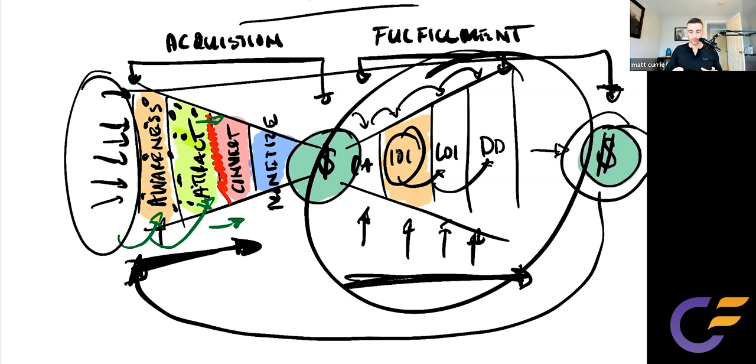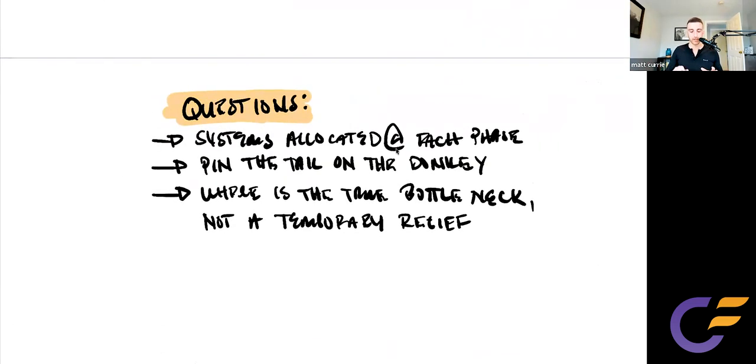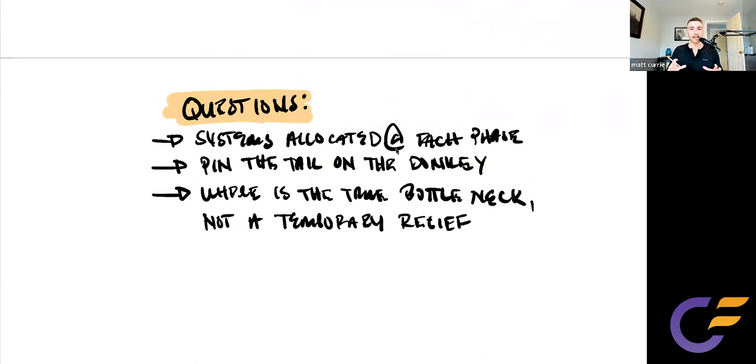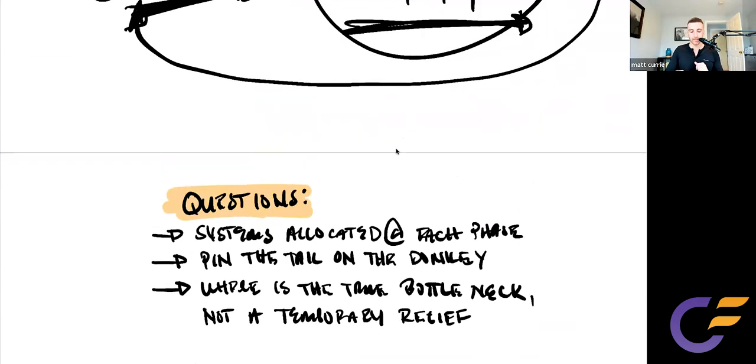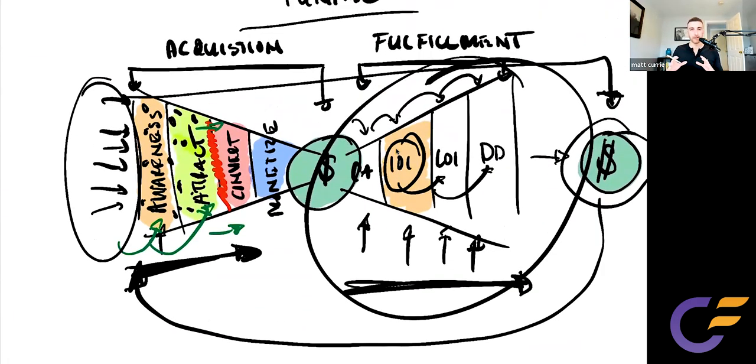We got to make sure three things, three questions I kind of want to leave you with. First one is, do you have systems allocated at each phase of the process in this kind of bow tie funnel phase? Do you have systems in place that are workable both to acquire customers and to fulfill them with time allocation on both? Okay.